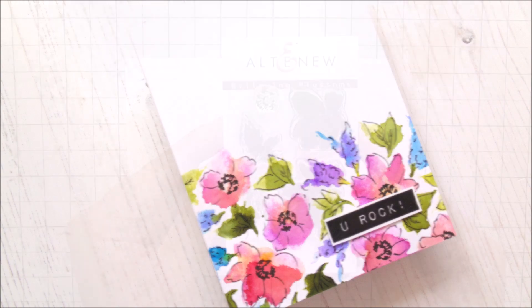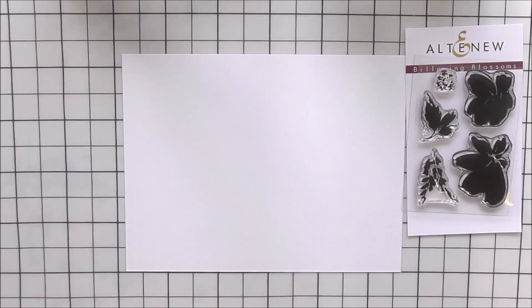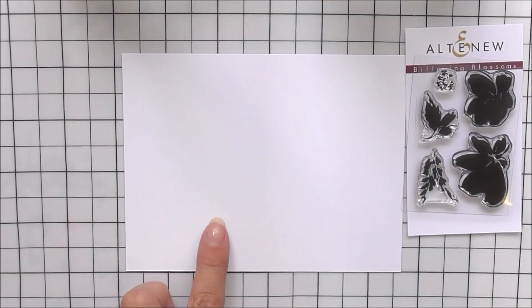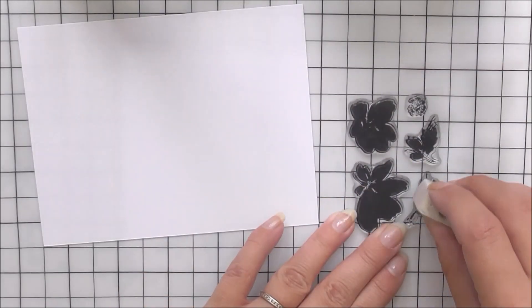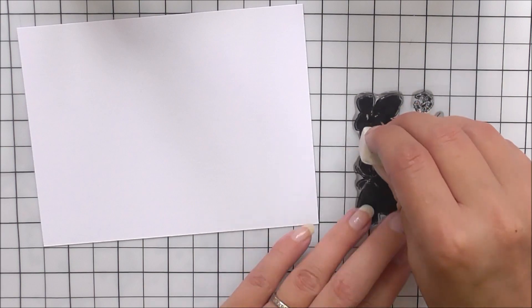To start with, I'm using this super sweet stamp set called Billowing Blossoms. It has two florals and a little bush as well as leaves and a center. I'm also going to be using the Spring Garden brush markers, a piece of watercolor cardstock, and a little mist sprayer.